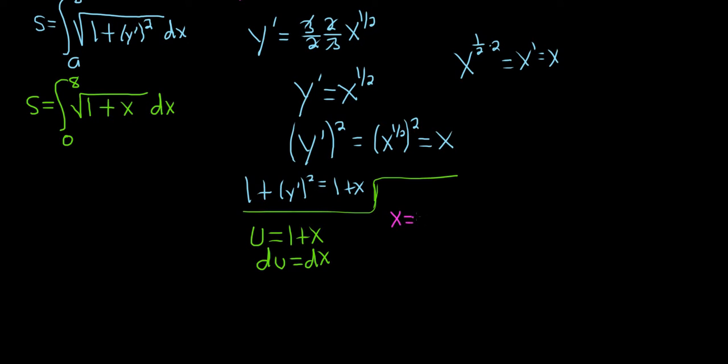So when x is equal to 0, you take the 0 and you plug it into your formula for u. So u is equal to 1 plus 0, which is equal to 1. And then when x is equal to 8, that's our upper limit of integration, u is equal to 1 plus 8, which is 9.